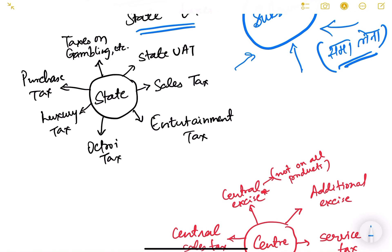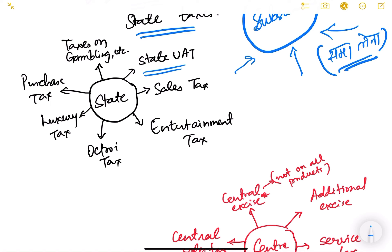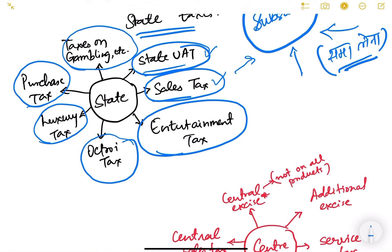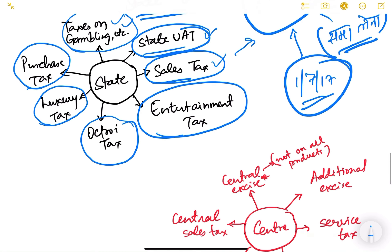State taxes subsumed under GST include: state VAT, state sales tax, entertainment tax, octroi tax (a tax on transportation of goods), luxury tax, purchase tax, and taxes on gambling, among others. These state taxes have been subsumed under GST with effect from 1st July 2017. This is not an exhaustive list — there are many more, but these are examples.